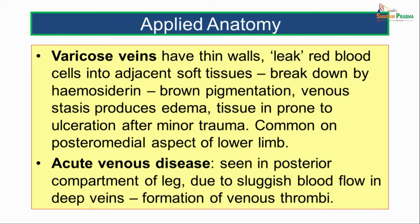These varicose veins have thin walls. There is leakage of red blood cells into the adjacent soft tissues. Breakdown of hemosiderin gives rise to brown pigmentation. The persistent venous stasis produces edema or increased tissue fluid, and such tissues are prone to ulceration following minor trauma. This is commonly seen on the posteromedial aspect of the lower limb — which is what was seen in our case scenario as dilated tortuous veins on the posteromedial aspect of the lower limb.